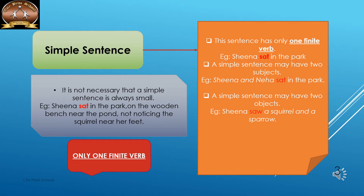The simple technique to identify a simple sentence is to check whether there is only one finite verb. If there is only one finite verb, it is a simple sentence, and there should not be any conjunction connecting two clauses. A conjunction can connect two words, but it should not connect two separate thoughts or ideas.